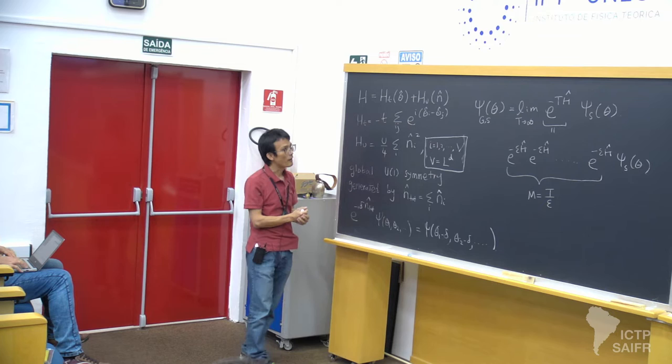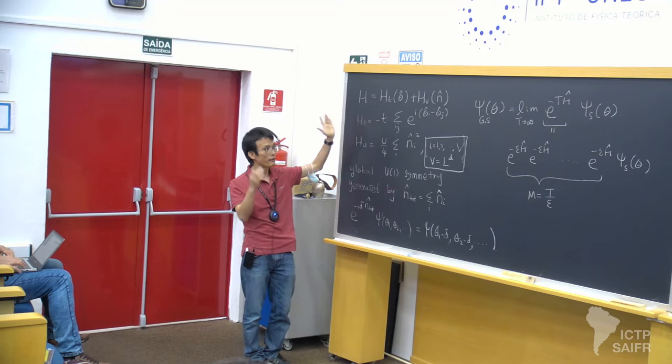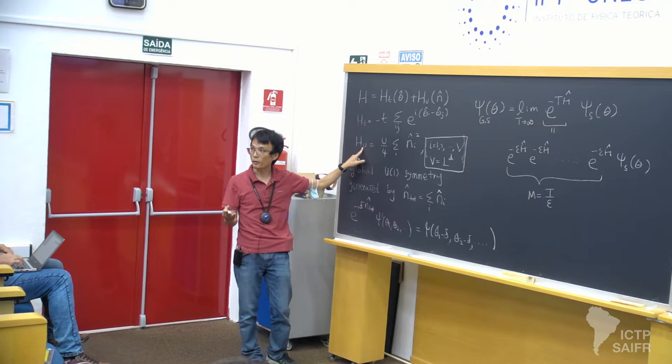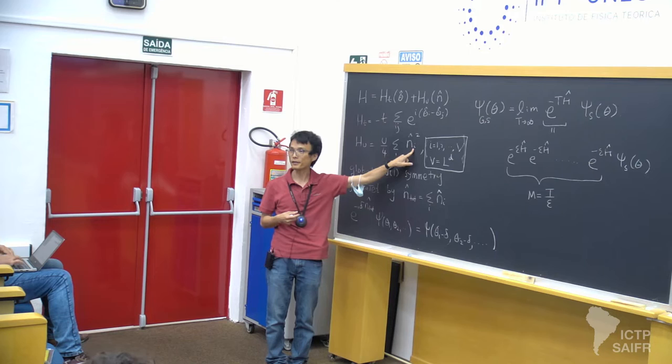We are considering a simple Hamiltonian from which we can study some emergent phenomena. The first term, the U-term, is just a kinetic energy whose energy is proportional to the square of the angular momentum at each site. You sum over all sites — that's the U-term.